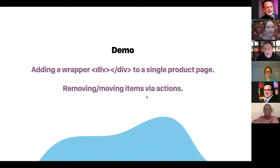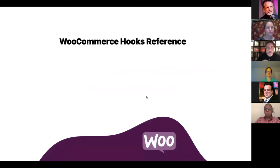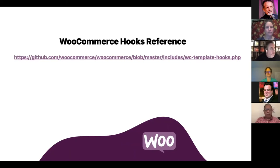So just there, all we did was add our own wrapping div to a single product page, and we were able to make some pretty cool customizations. We were also able to remove and move items just via actions, and by changing priority we're able to move things to different locations on the page. Next, where do you find all these hooks and what's available for you to hook into?